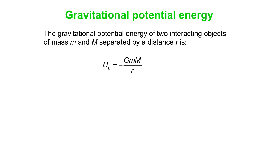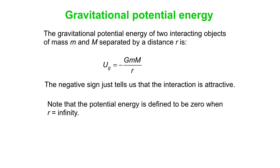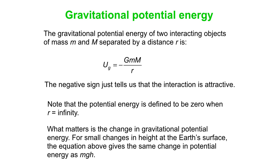The gravitational potential energy equation is U_g equals minus GMm over r — not r squared, but r. The minus sign tells us it's an attractive interaction, and the zero is predefined: potential energy is zero as r goes to infinity. What matters is the change in gravitational potential energy. For small changes in height near Earth's surface, this equation is equivalent to our mgh form of the change in gravitational potential energy.